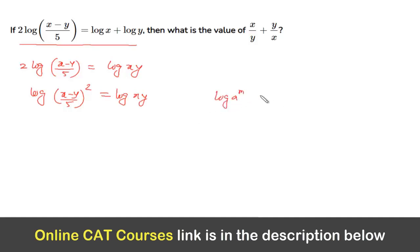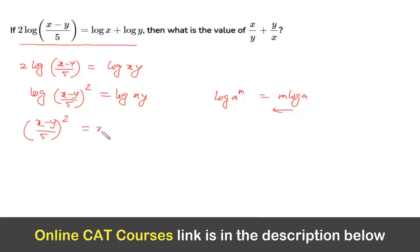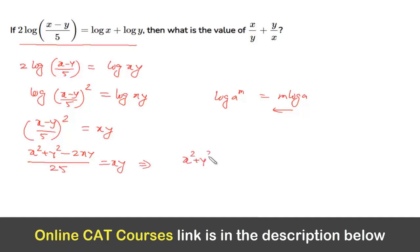We applied the rule that log(a^m) = m·log(a) and vice versa. Taking anti-log both sides, we get (x − y)/5 whole square = x·y. Expanding: (x² + y² − 2xy)/25 = x·y, which gives x² + y² − 2xy = 25xy.